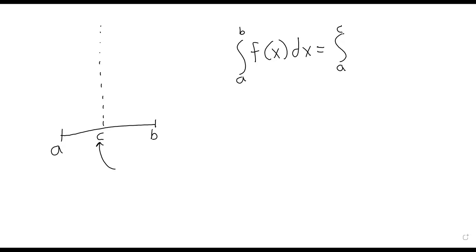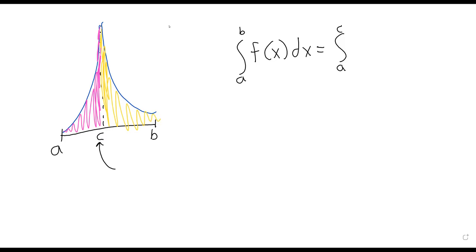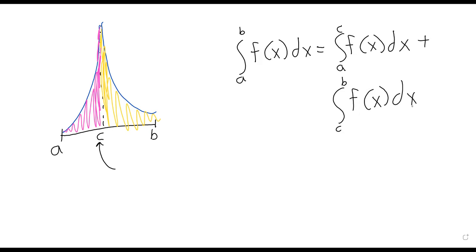If we have our function looking something like this, we can find the area to the left of the asymptote and the area to the right of the asymptote, and just add those areas together. It's cheatiness—there's no use pretending it's not cheatiness—because each of these integrals is an improper integral. So each is secretly a limit, and you have to take multiple limits. But in terms of the actual definition, it's pretty straightforward.